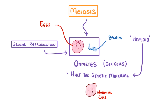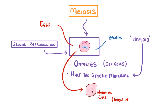When two of these gametes combine they'll end up forming a normal cell that can go on to grow into a new organism. And because that normal cell will have two sets of genetic information, one from each parent, we call them diploid cells.